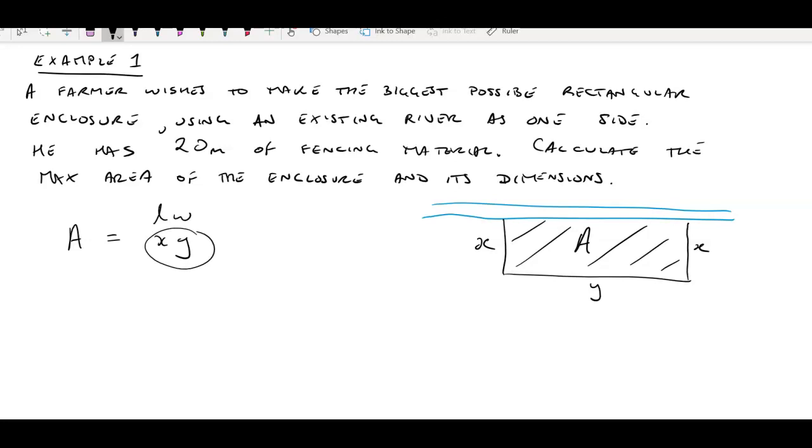So we need to use the extra information in the question, and there always is extra information. In this case the extra information is that there is 20 metres of fencing material. So those three sides have to equal 20 metres: 2X plus Y equals 20 metres.